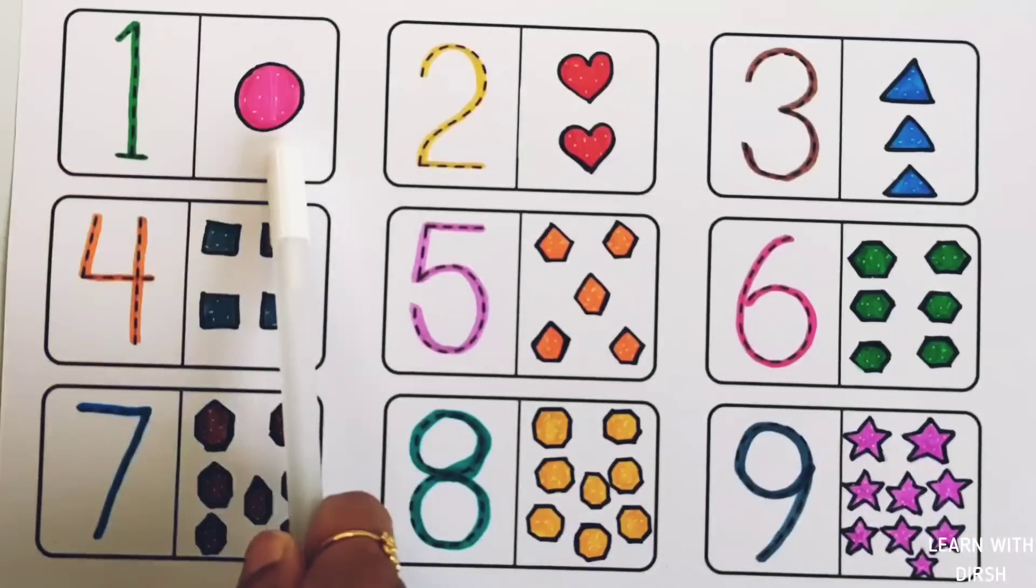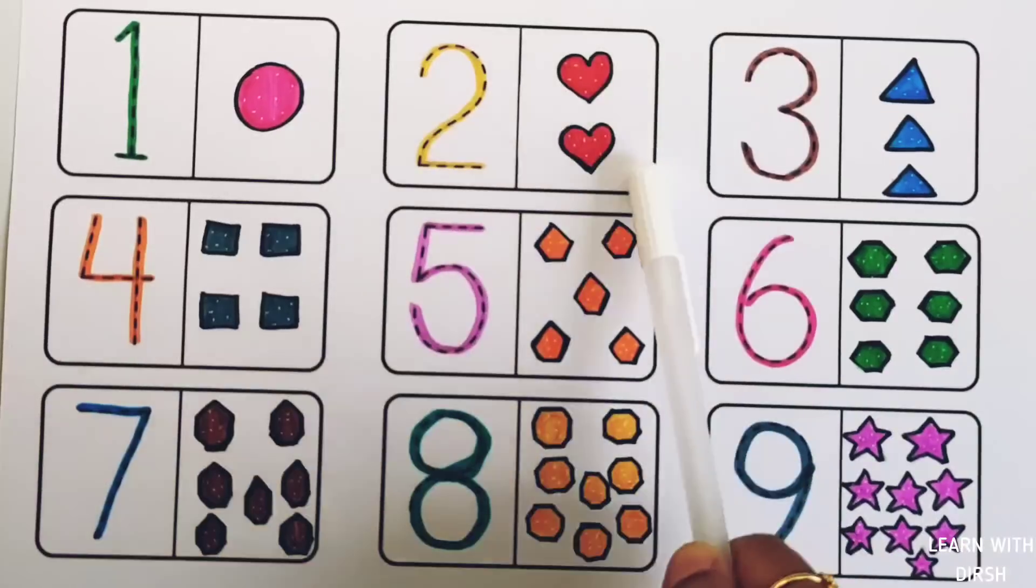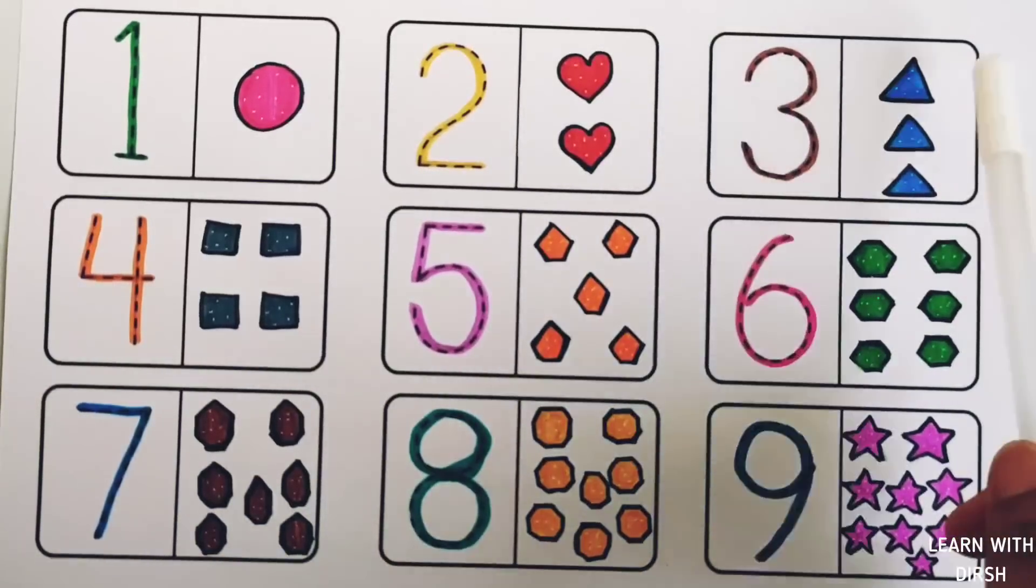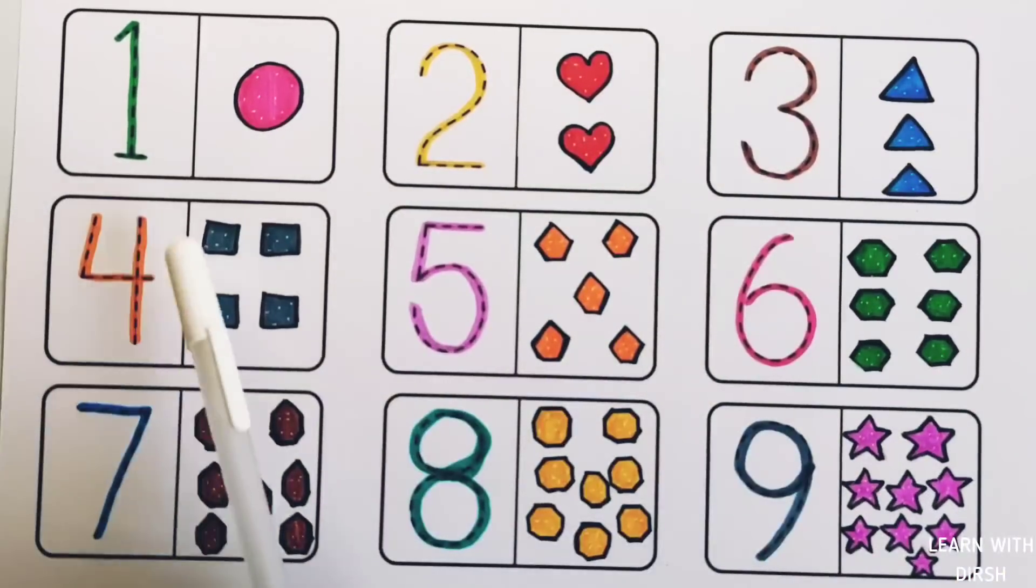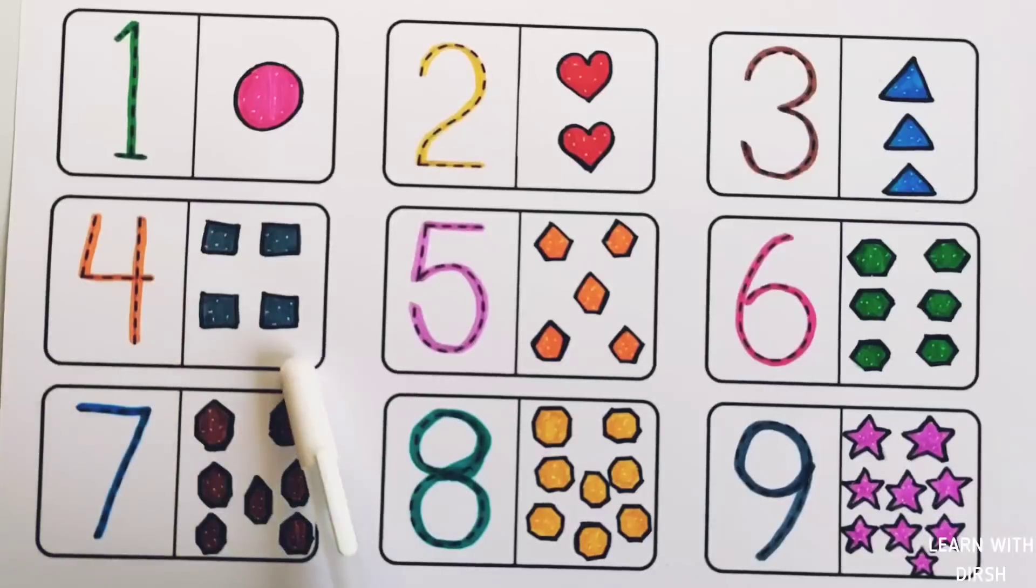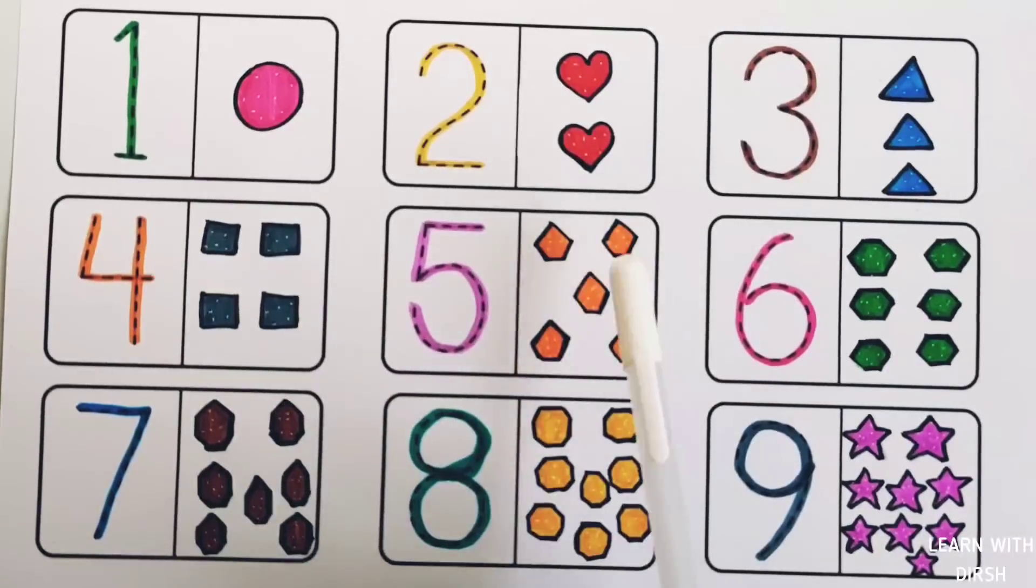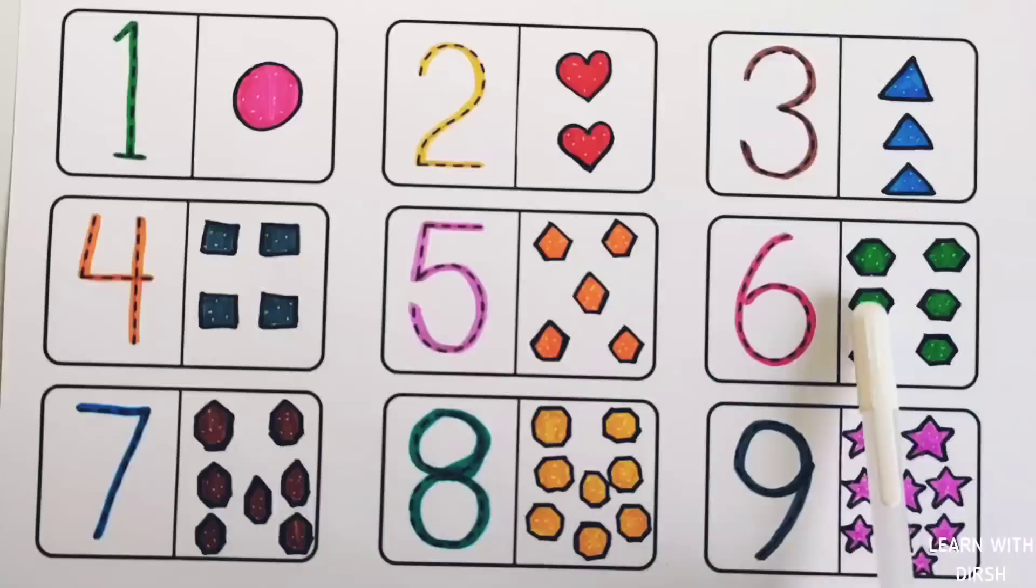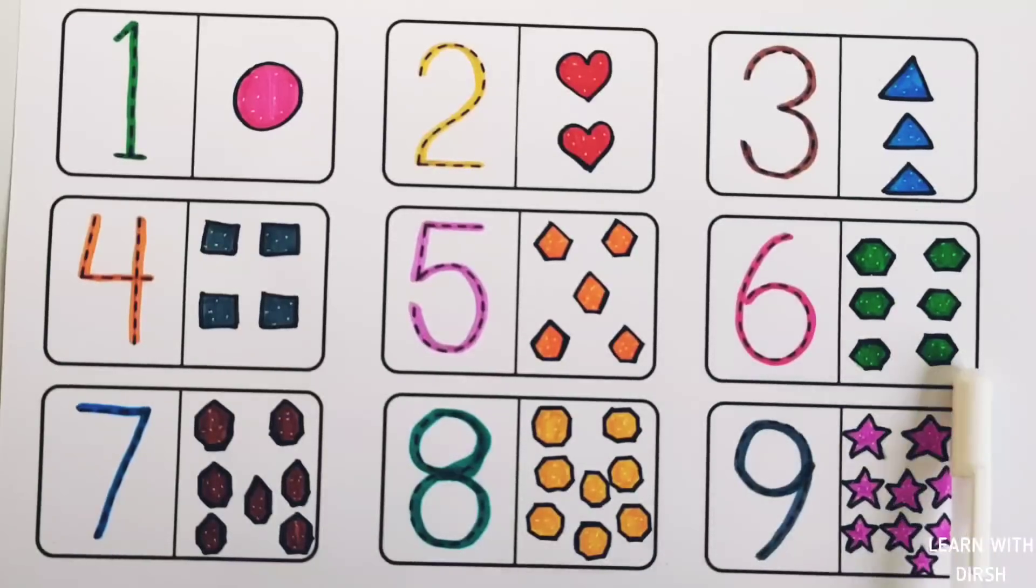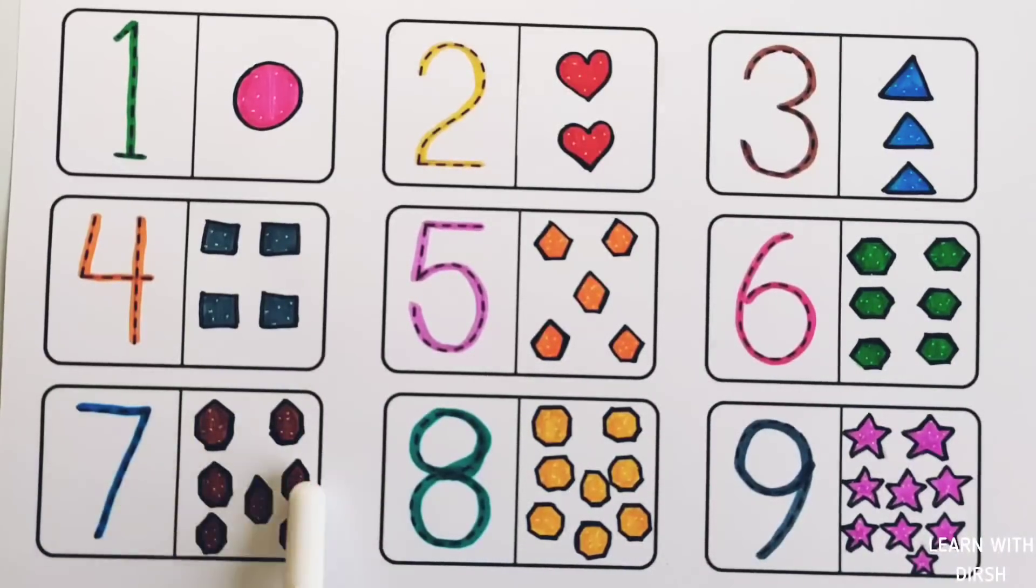Number one: one circle. Number two: 1, 2, two hearts. Number three: 1, 2, 3, three triangles. Number four: 1, 2, 3, 4, four squares. Number five: 1, 2, 3, 4, 5, five pentagons. Number six: 1, 2, 3, 4, 5, 6, six hexagons. Number seven: 1, 2, 3, 4, 5, 6, 7, seven hexagons. Number eight: 1, 2, 3, 4, 5, 6, 7, 8, eight octagons. Number nine: 1, 2, 3, 4, 5, 6, 7, 8, 9, nine stars.